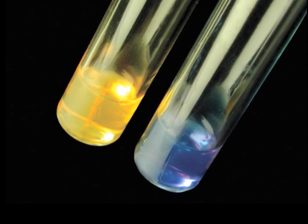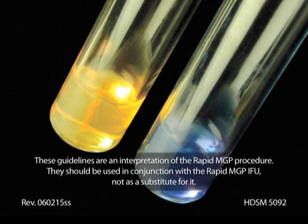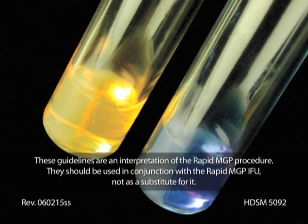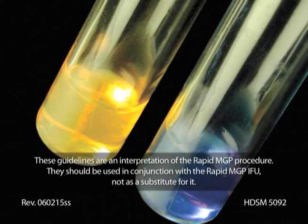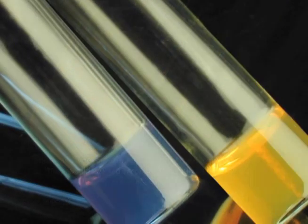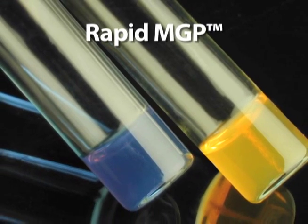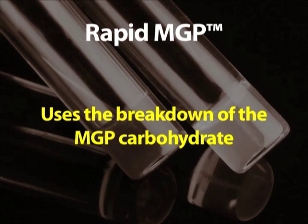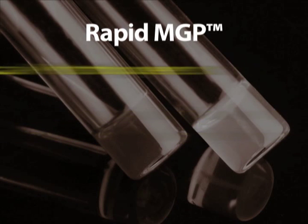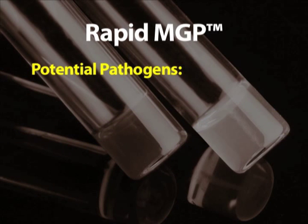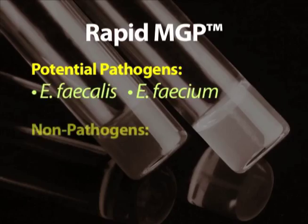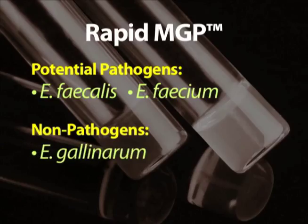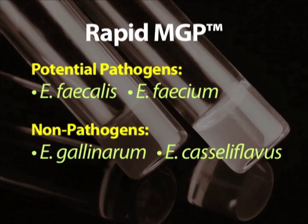If you need a way to differentiate between potentially pathogenic species of enterococcus and non-pathogenic species of enterococcus, Hardy's Rapid MGP will do just that. Rapid MGP uses the breakdown of the MGP carbohydrate to separate the nosocomial pathogens Enterococcus faecalis and Enterococcus faecium from the non-pathogenic species, which are Enterococcus gallinarum and Enterococcus casseliflavus.